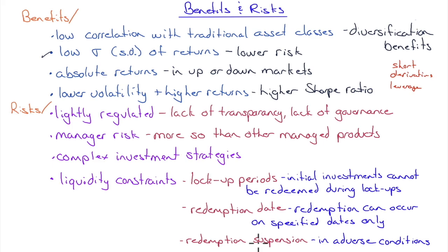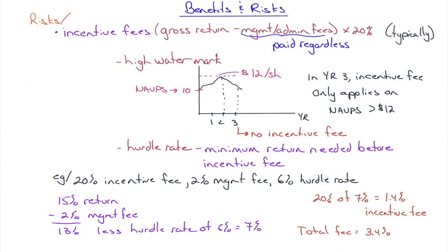Redemption suspension is another risk: if markets aren't doing well and positions aren't performing as expected but will perform because they're derivative-based, the manager can suspend all redemptions. The reasoning is: if forced to give someone their money back, they'd have to unwind a position and take losses that hurt everyone. So to protect everyone, no one gets their money back for the time being.